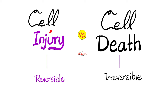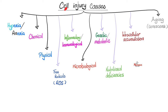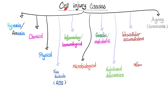Here, your cell is just hurt, but here your cell is gone. And if you are familiar with this pathology playlist, you know that we talked about cell death before - apoptosis versus necrosis. What can cause cell injury, which is a reversible condition?